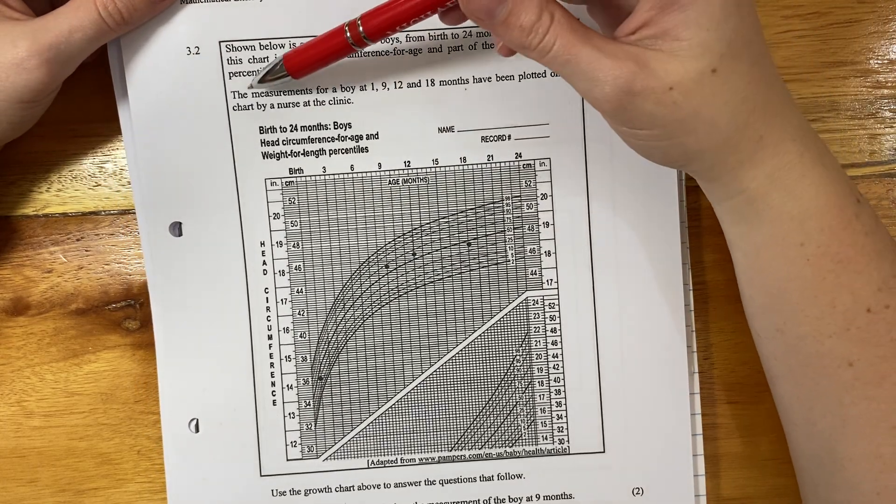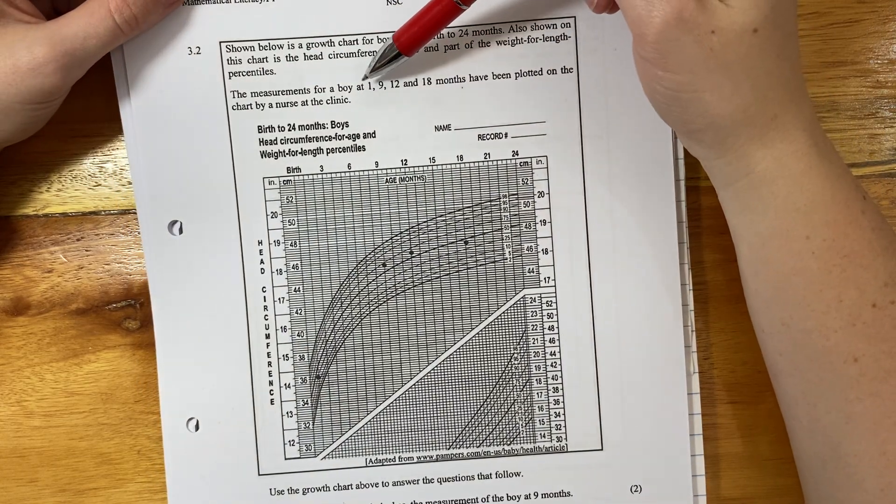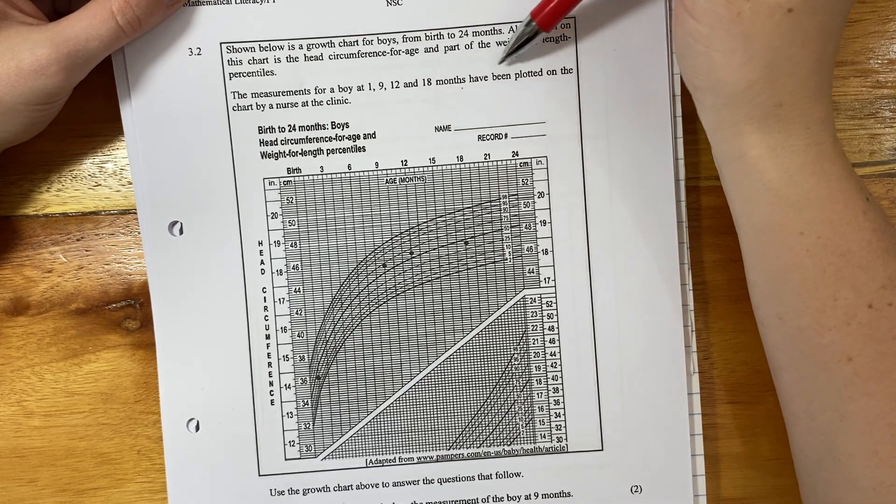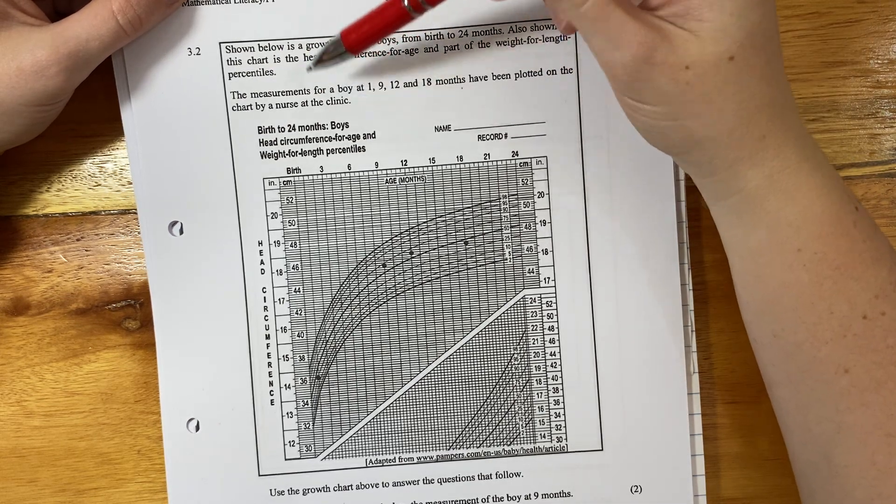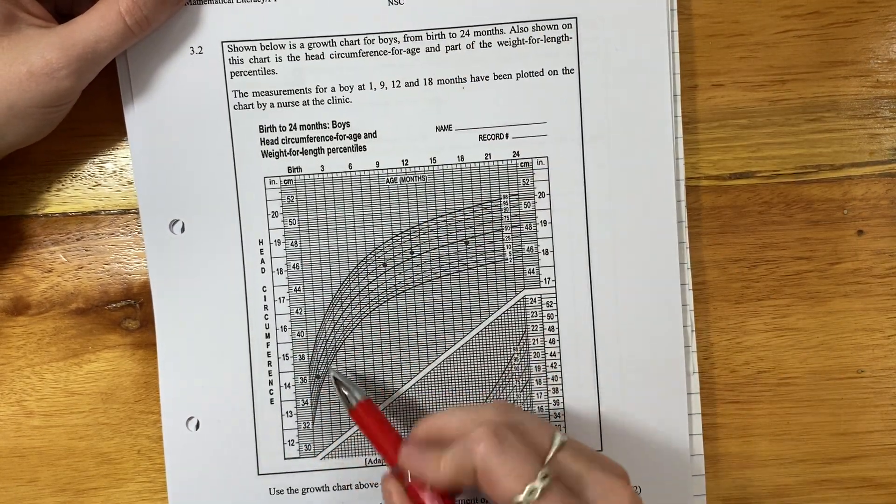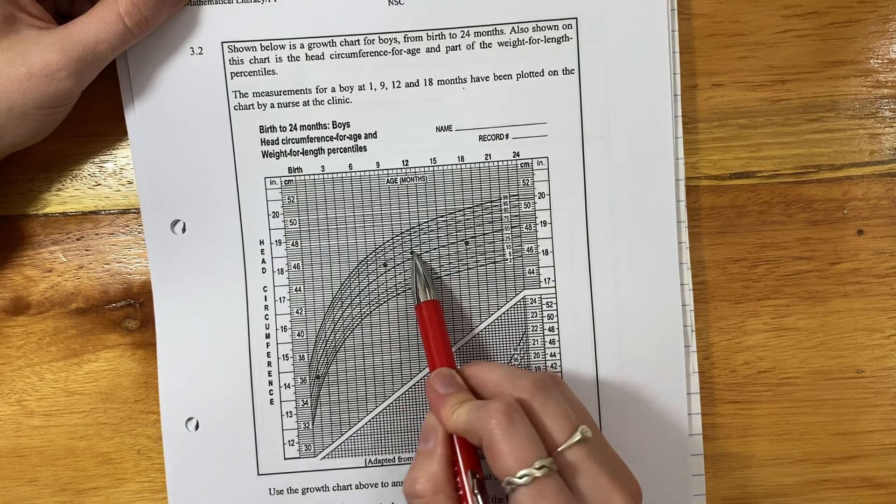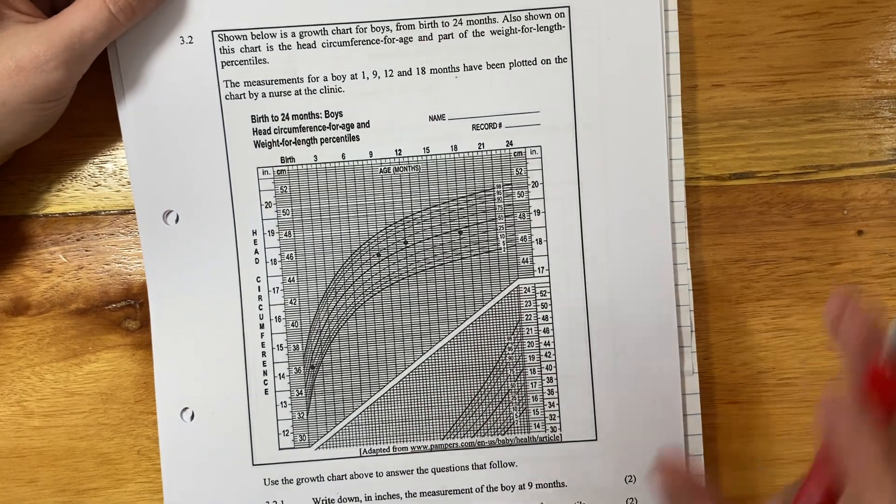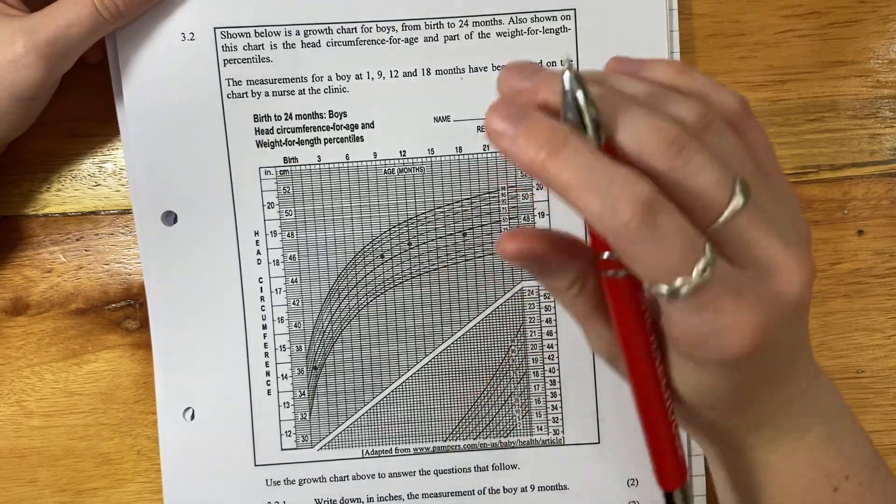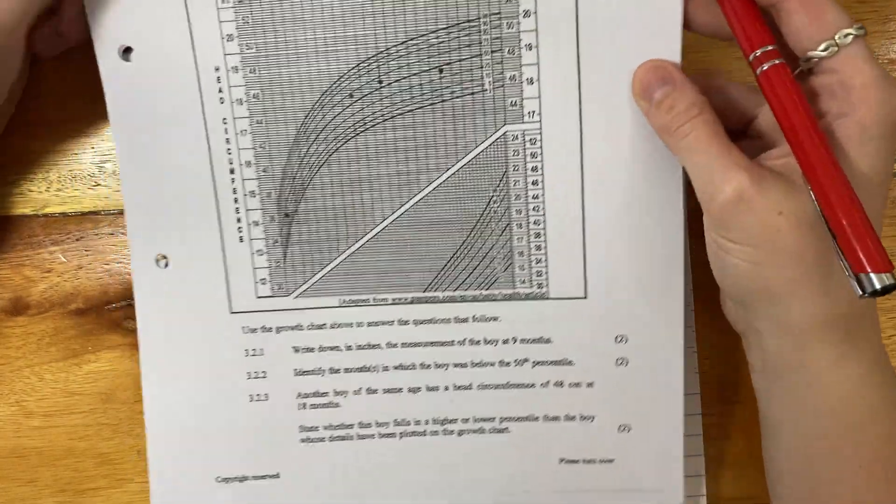The measurements for a boy at 1, 9, 12, and 18 months have been plotted on the chart for a nurse at the clinic. So this is a specific chart. So here's the chart and she's plotted these points. So there's one at 1, 9, 12, and 18 months. Okay, we're probably going to have to comment on those. So just bear those in mind. If you want to color them in to help you, whatever, do what you need to do. Let's read the questions.